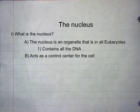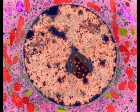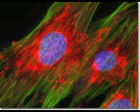It acts as the control center for the cell. The nucleus contains a full set of genes — it contains all the instructions for the cell, from making proteins to when to divide.